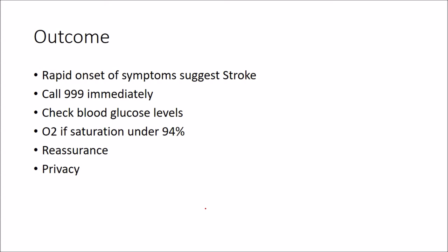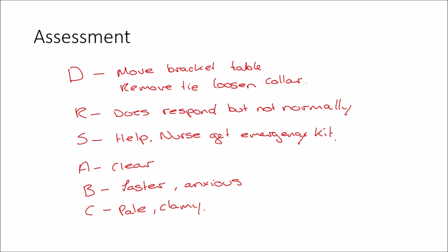So by doing an assessment of this patient, we were able to work out what the problem was. Had we not gone through this assessment, we could have missed some vital things. So we could have missed the fact that the patient's circulation didn't appear normal. Ultimately, that's the problem with a stroke. It's that the circulation to the brain is not normal. So it's important to go through this process to give you the information that you need.